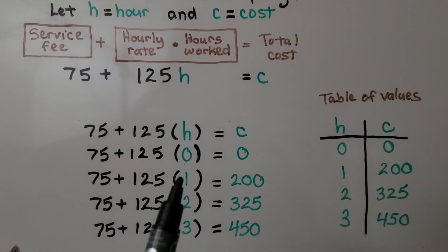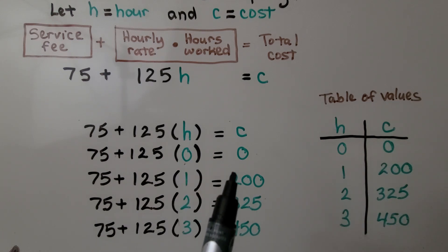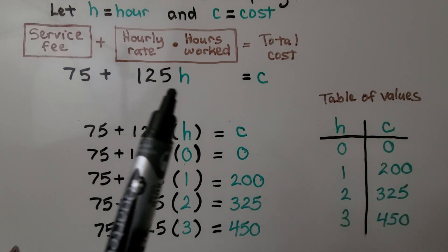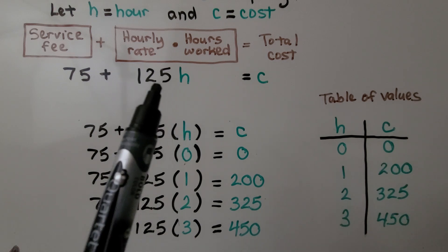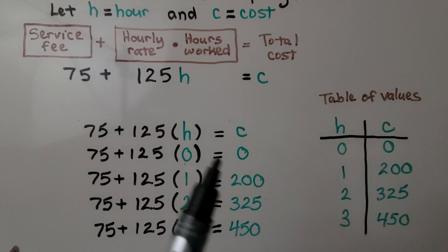And if they work one hour, then the cost is $200. We have 125 times one, which is 125, plus 75, that's 200.